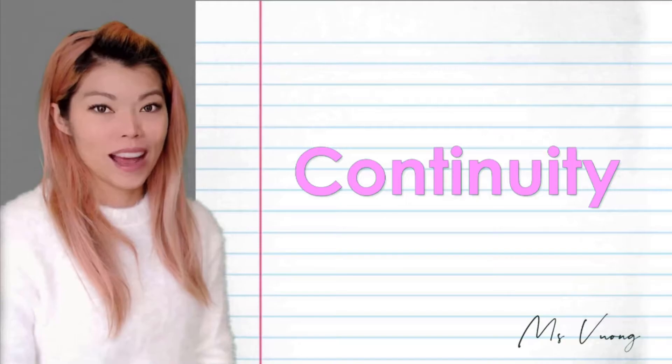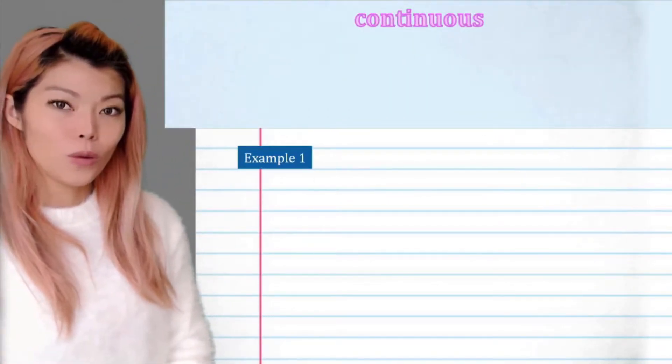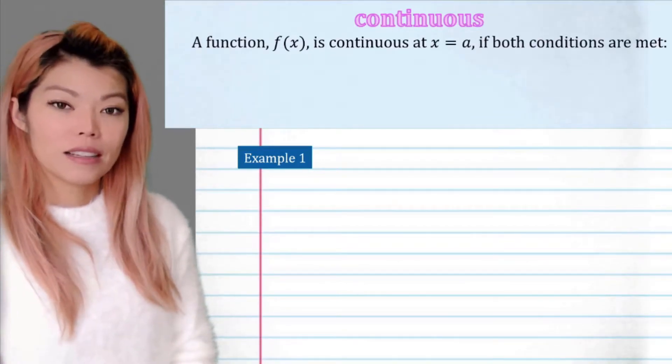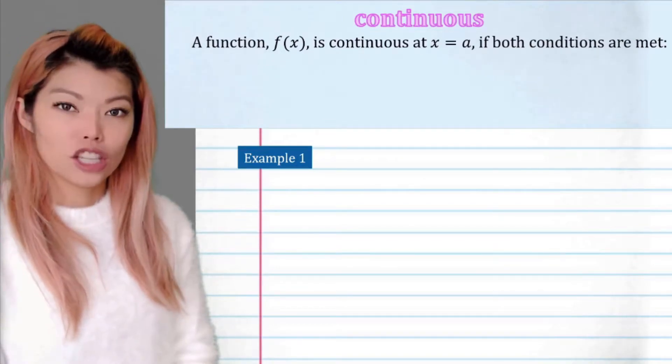Hi, I'm Ms. Boong. Let's have a look at continuity. What do we define as continuous? A function f of x is continuous at x equals a if both of these conditions are met.